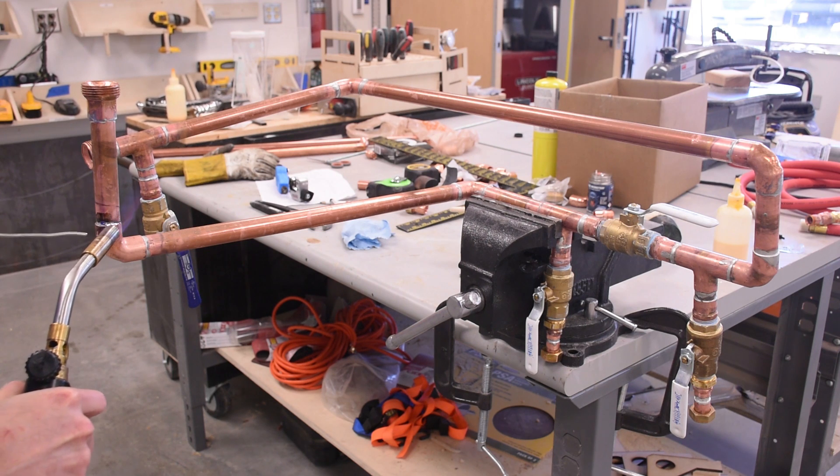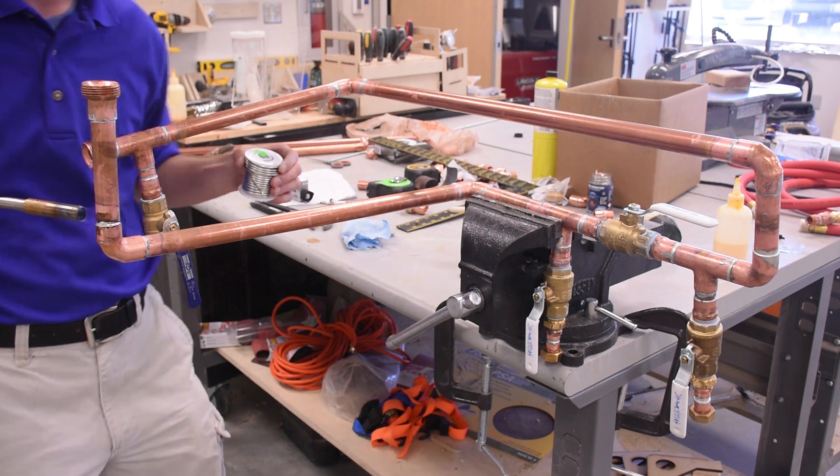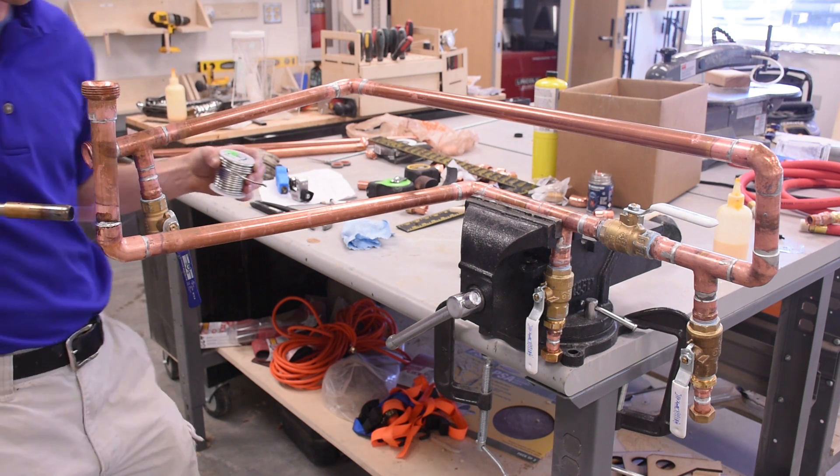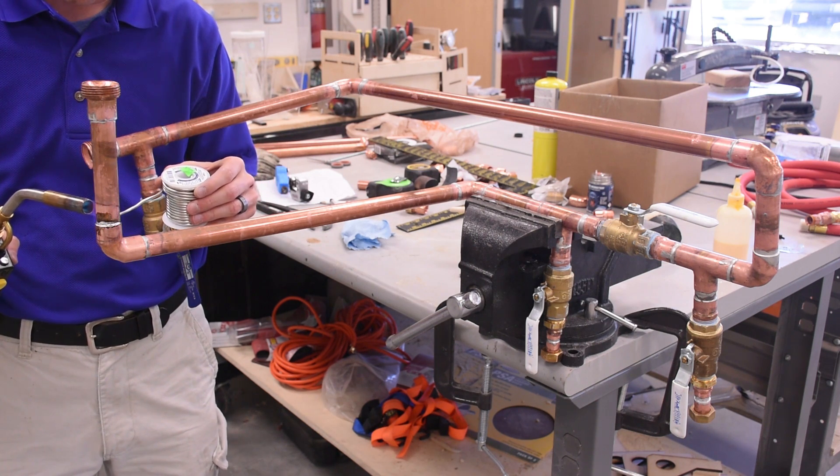This manifold will join the rest of the system at the two unions at each end. Be careful when you design systems because you frequently won't be able to tighten a threaded connection because of some odd geometry.